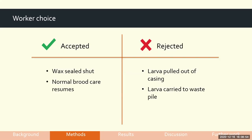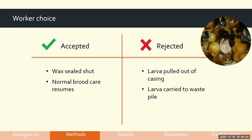We're essentially presenting a choice for the workers. They can either accept the manipulated larva — in which case you'd see the wax sealed shut as they chomp with their mandibles, followed by normal brood care behaviours like warming and feeding. Or they could reject the larva, in which case they use their mandibles to pull the larva out of the nest area, pick it up and carry it to the waste pile.